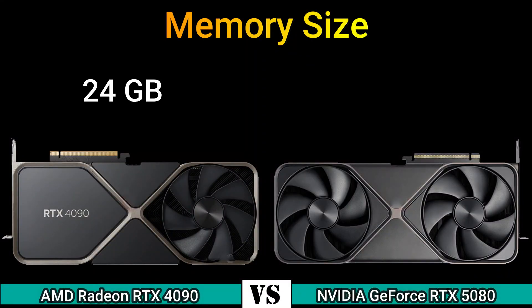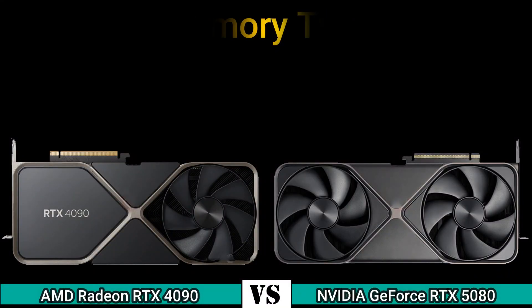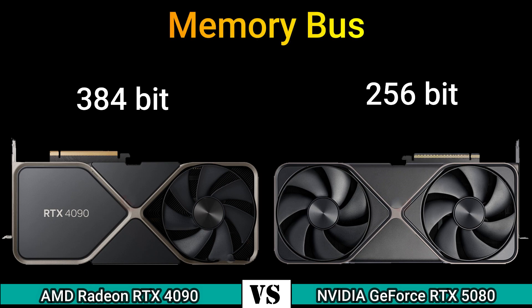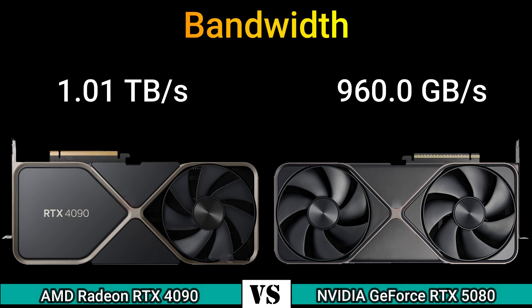Memory size 24 GB and 16 GB. Memory type GDDR6X and GDDR7. Memory bus 384-bit and 256-bit. Bandwidth 1.01 TB/s and 960.0 GB/s.